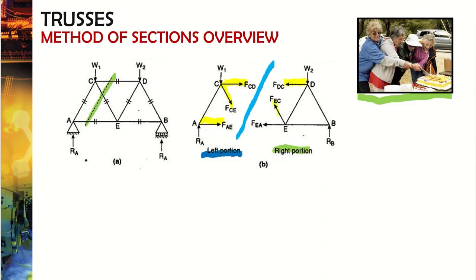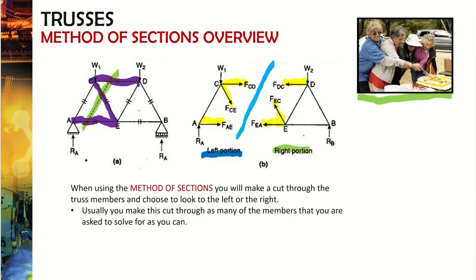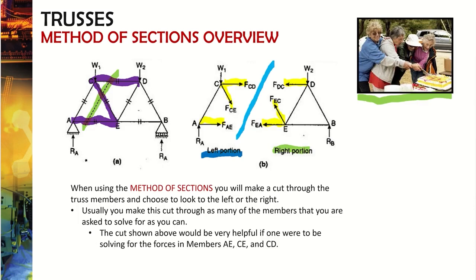When we talk about method of sections, the idea is you make a cut through different members of the truss — usually the ones you want to solve for. Most typically in a problem you would be asked to solve for members AE, CE, and CD, so the cut you want to make goes through all three of those members. In this case the cut would be very helpful to solve for those three members: AE, CE, and CD.